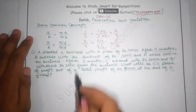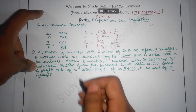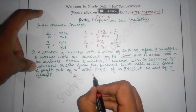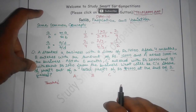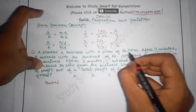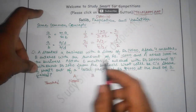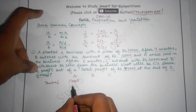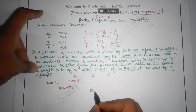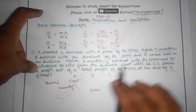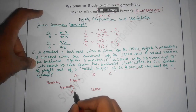We will approach this problem by writing A, B, C with their respective tenures. A started with Rs. 14,000 at the start of the business. After 4 months, B entered with Rs. 12,000 and A added Rs. 2,000, making A's total investment after 4 months equal to Rs. 16,000.